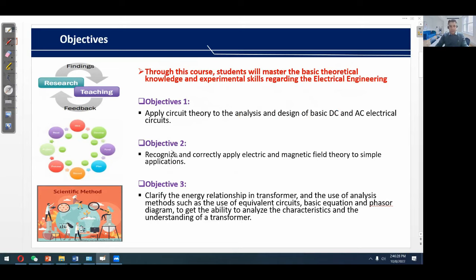To achieve objective 2, we recognize and correctly apply electric and magnetic field theory to simple applications. To get objective 3, we clarify the energy relationship in transformers and the use of analysis methods such as the use of equivalent circuits, basic equations, and phasor diagrams to get the ability to analyze the characteristics and understanding of a transformer.